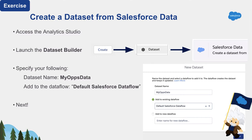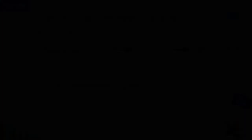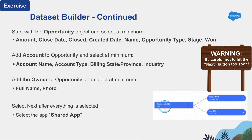Dataset Builder helps because once you say this dashboard is about opportunities, you start with opportunity and automatically see the relationships as they exist in the Salesforce database — what can pull to that same record. We're going to create a dataset starting with opportunity, bring some fields, add account, add user, and that's it. Let's go build this dataset by clicking Create, then Create Dataset, and selecting Salesforce Data.